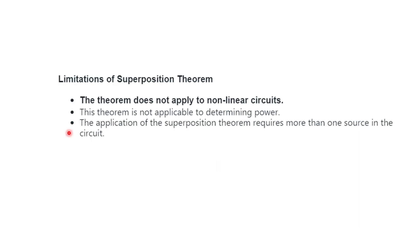Now, there are a few limitations of the superposition theorem. The first limitation is that this theorem does not apply to non-linear circuits. The second limitation is that this theorem is not applicable to determining power. And the third limitation is that the application of the superposition theorem requires more than one source in the circuit.